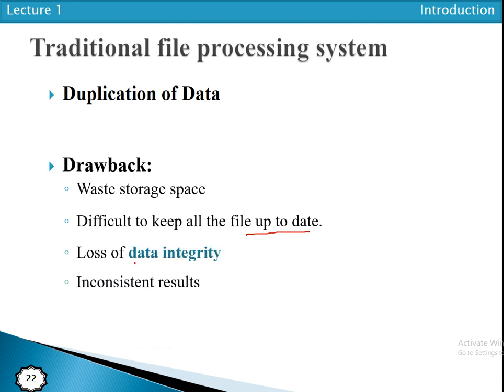Another issue is data integrity, which is also related to the duplication of data and is a key drawback of the traditional file processing system. Data integrity means the correctness or accuracy of the data. In traditional file processing systems, data is not in correct or accurate form, and we may not be able to maintain the accuracy of data.